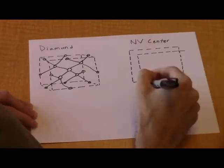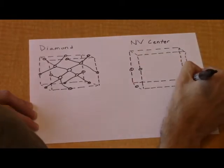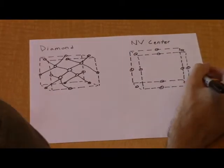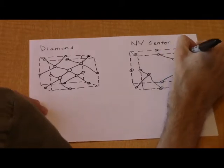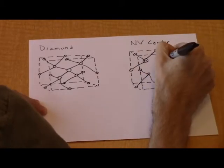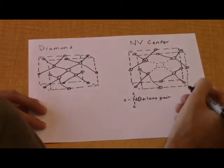This leads to the neutral N-V0 state, but it does not exhibit the same magneto-optic activity as the negative charge state, N-V-, which has a sixth electron that is taken from the lattice. For this video, we will focus on the negative charge state, as that is what practically all research into N-V centers uses.